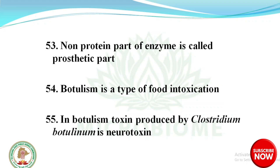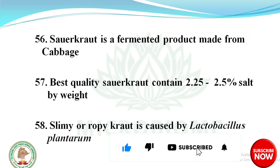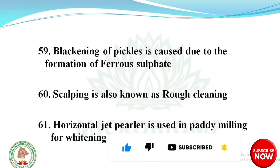Botulism is a type of food intoxication. Botulism toxin is produced by Clostridium botulinum and is a neurotoxin. Sauerkraut is a fermented product made from cabbage. Best quality sauerkraut contains 2.25 to 2.5% salt by weight. Slimy or ropy curd is caused by Lactobacillus plantarum. Blackening of pickles is caused due to formation of ferrous sulfate.